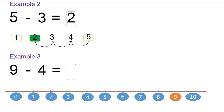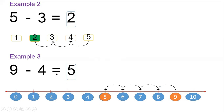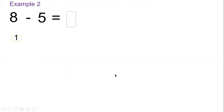For nine minus four, we write from one up to nine — start at nine, go backwards four steps: one, two, three, four — where we stop becomes our answer, so our answer is five. Nine minus four equals five.